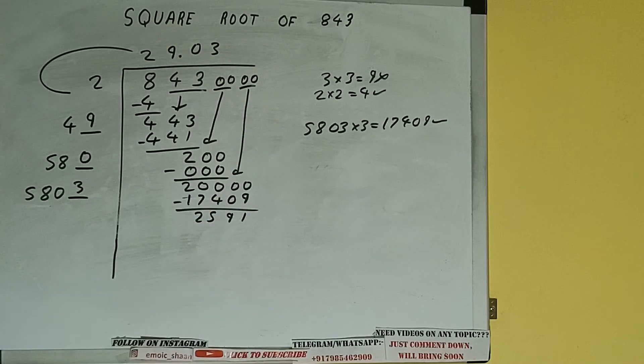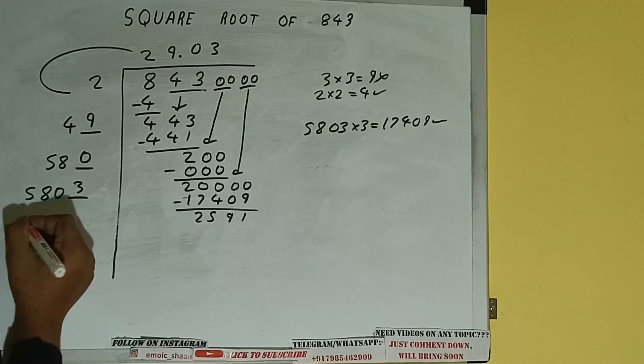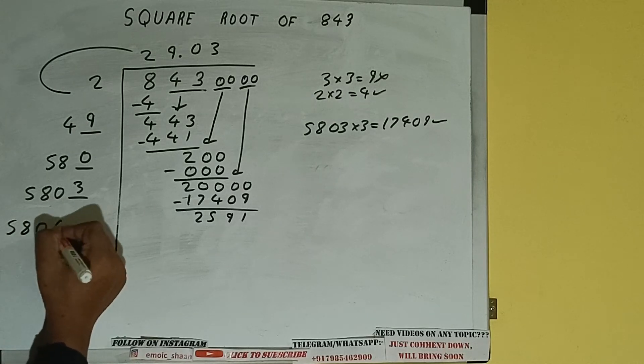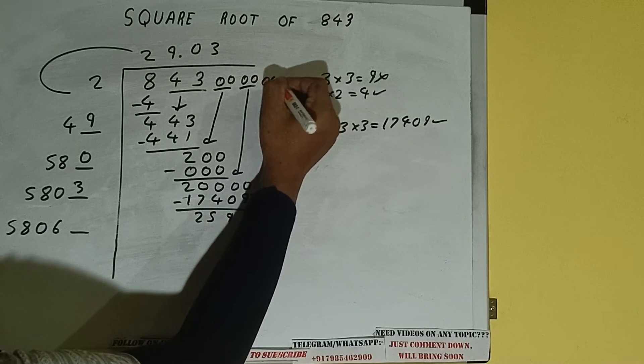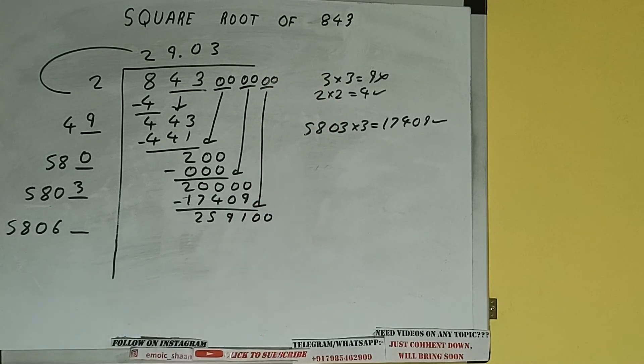Now 5803 into 3 we did so add both. So 5803 plus 3 will be 5806 and 1 digit extra. And this number we need to make it big. So bring the next pair of zeros down and it will be 259,100.